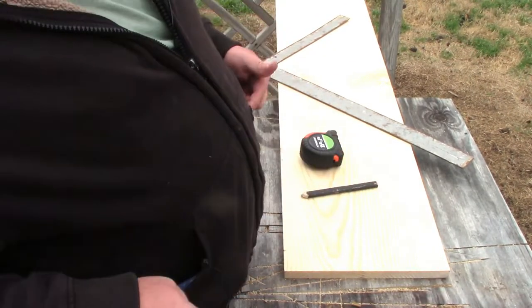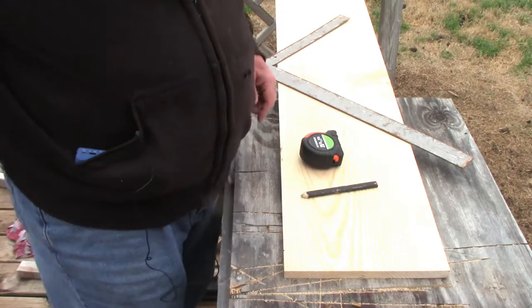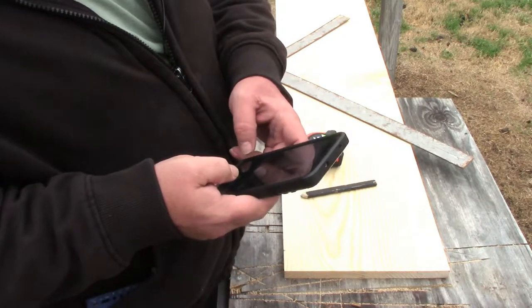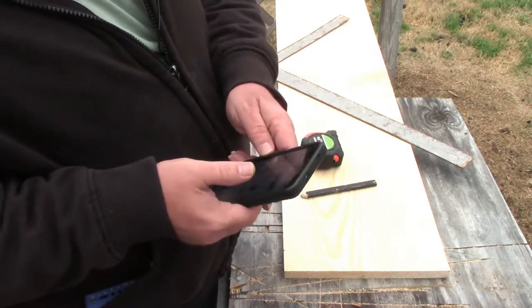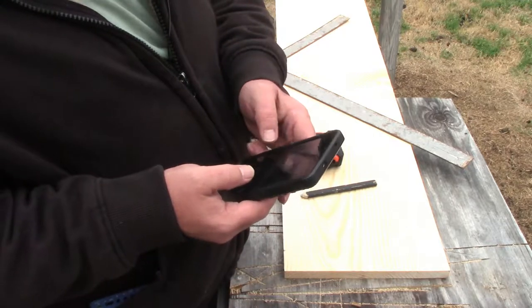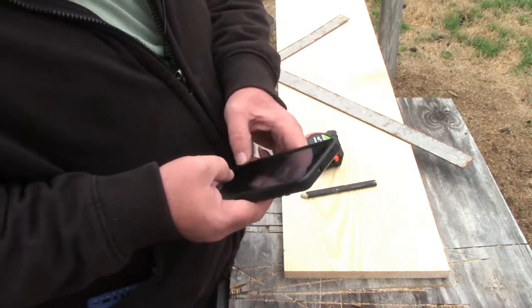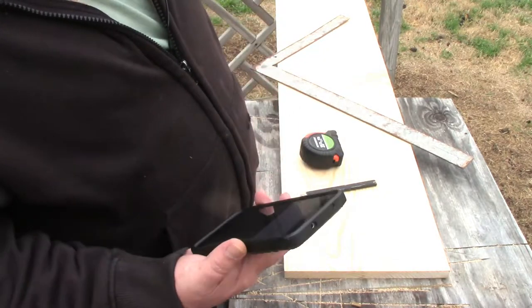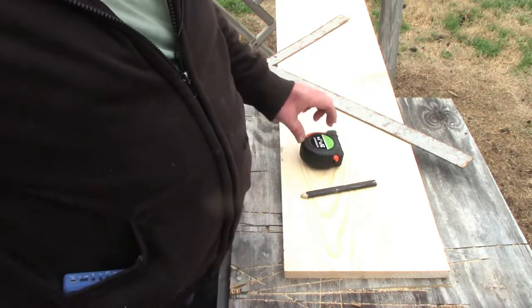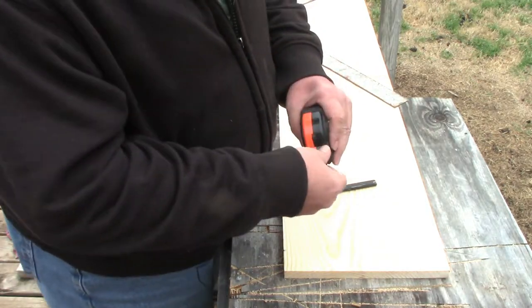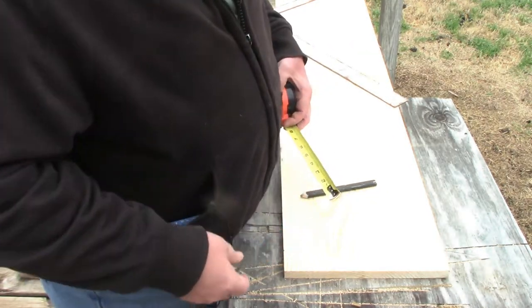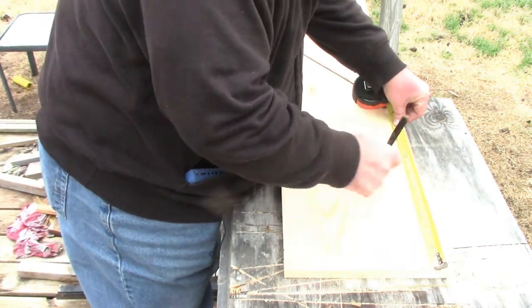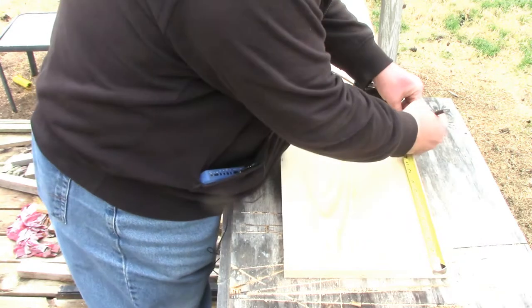When we calculate this out, you want your top dimension for your side to be three times your bottom board. Well, at least that's the numbers I'm working with. If we have five and a quarter inches times three, we have fifteen and three quarter inches across the top.